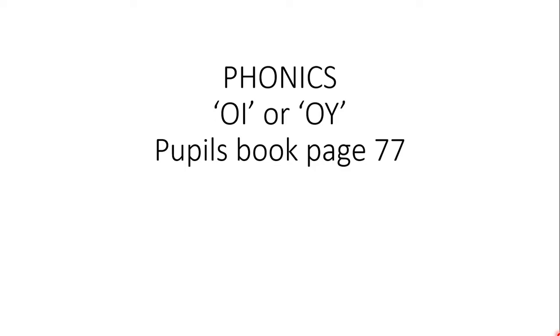Hello boys and girls, we are on unit 7 and now it's the phonics turn. Let's go to pupils book page number 77. We are going to study phonics. The sound that we are going to study today is the oi sound. The oi sound can be written in two different ways, as you can see here: oi or oy.